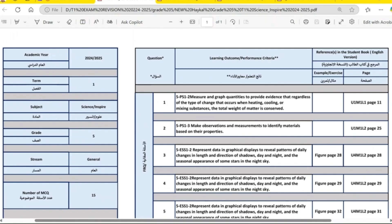This is the Heikal. As you can see on the left of the Heikal, it tells you Term 1 Science, Grade 5.